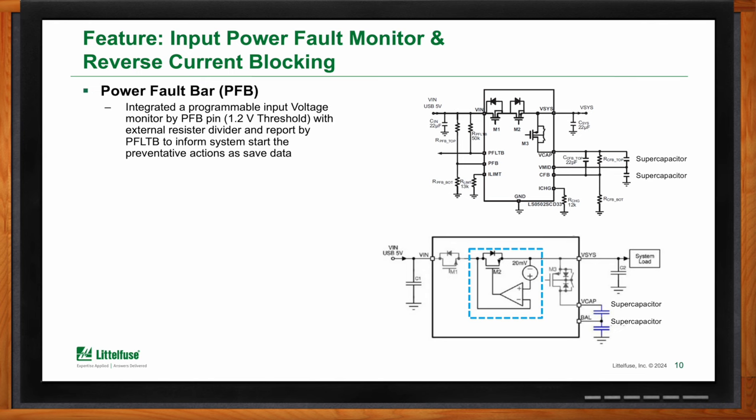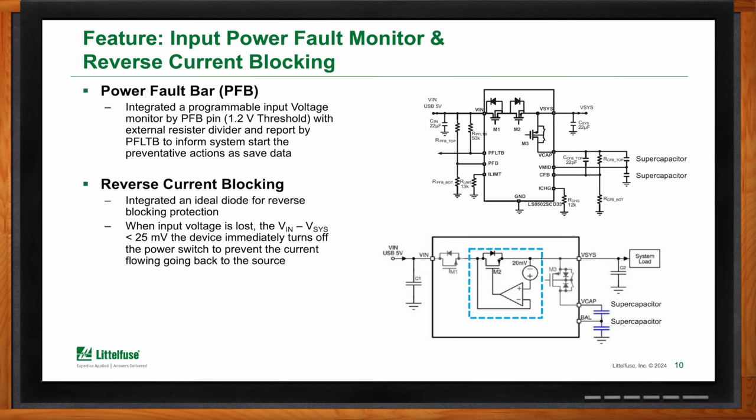The power fault bar (PFB) is an integrated programmable input voltage monitor. It is a pin that connects to the main power rail and operates with an external resistance divider — that's how you set the voltage threshold. If you go above the predetermined set level, it flags on that pin to inform the system of a fault. The chip also includes an ideal diode circuit for reverse current blocking and protection. When input voltage is lost — determined when input voltage minus output voltage is less than 25 milliamps — the device immediately turns off the power switch (series FETs), ensuring that power does not flow from the system back into the power source.